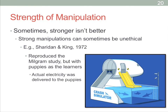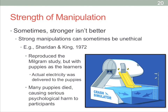They decided to recreate this with puppies using real electricity, actually having people electrocute puppies to death, because you can't have puppies act like they're dying. Many participants actually ended up killing their puppy. Beyond the ethical harm to the animals, this was psychologically harmful to participants, who walked away knowing they had killed an adorable little animal that had done them no harm. This study would be deemed totally unethical nowadays — it was way too strong of a manipulation and very likely had long-term negative repercussions on both the participants and, of course, the poor puppies.